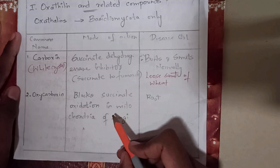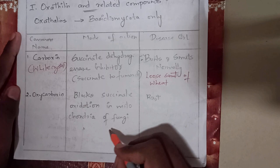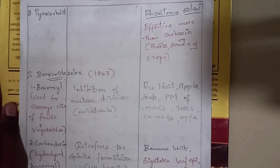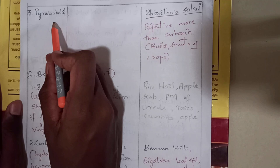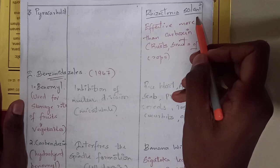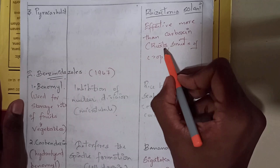The third compound is pyrocarbolate, used against Rhizoctonia solani, a root rot which affects and rots the roots. It is more effective than carboxyl, which is used for rust and smut of crops, making pyrocarbolate the mostly preferred option.